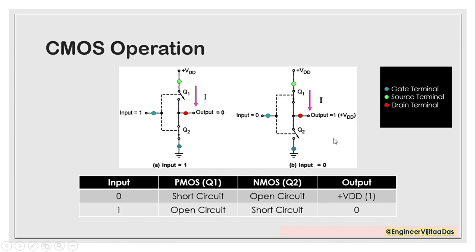On the opposite hand, when we are giving input as 0, for PMOS it is inverting the value and we are getting Q1 as 1, so VDD is 1. For Q2 it is becoming open circuit, so this is totally 0.